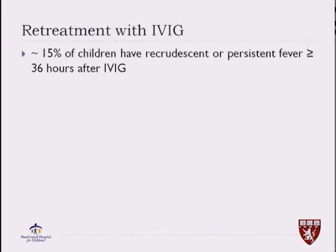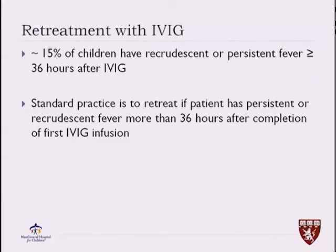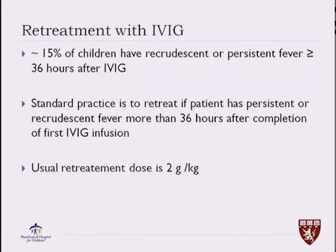Fifteen percent of children with Kawasaki disease have persistent fever, defined as a temperature that continues to be elevated 36 hours after IVIG. IV gamma globulin can itself cause fever, so we are very careful with any temperature that occurs after IVIG and think it might be a side effect. We also rely on repeating blood work and inflammatory markers to see if they are indeed coming down. But if we think those patients have persistent fever and ongoing vasculitis, the standard practice is to retreat with another dose of two grams per kilo.